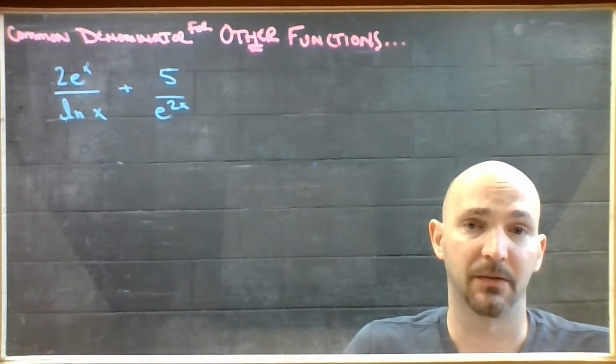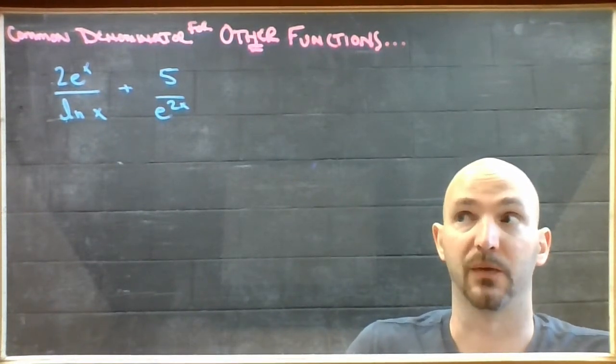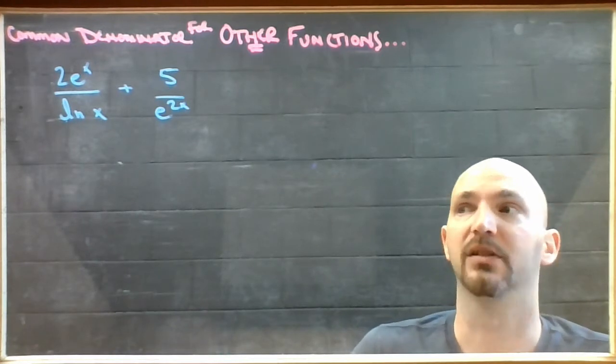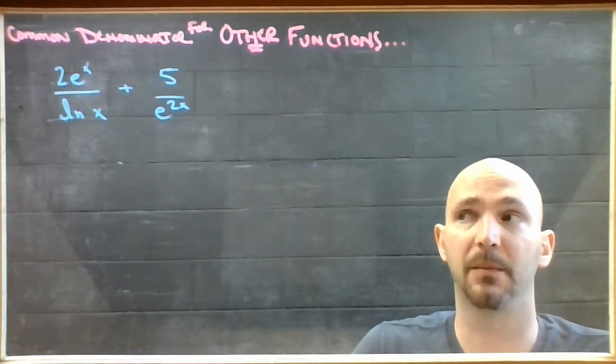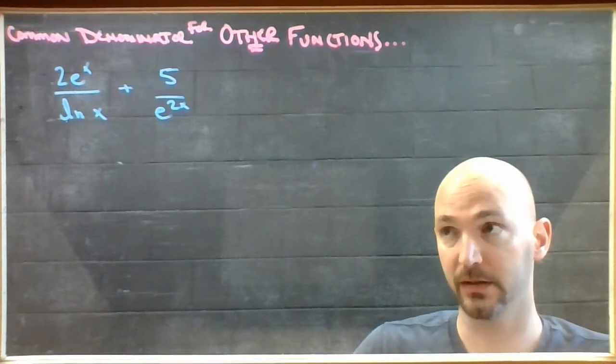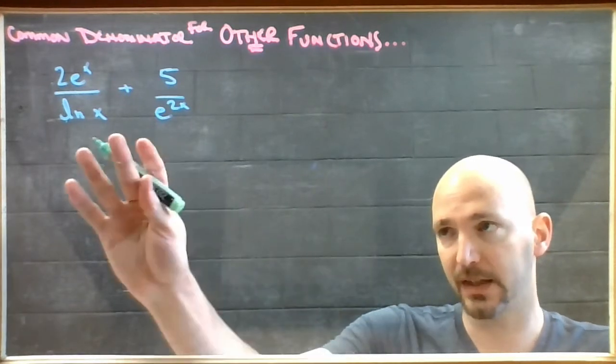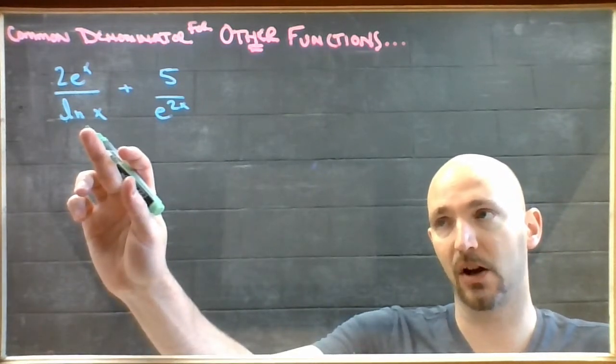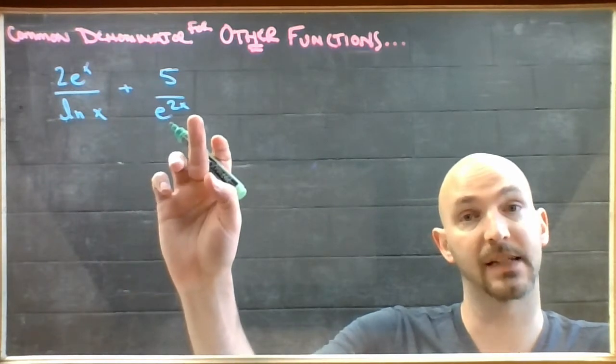There are three types of common denominator problems that involve other functions, just like in the trig section. The first one is where the denominators are nowhere near each other. If I look at these two, this one has a ln but no e, this one has an e but no ln.